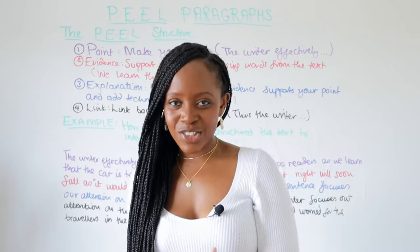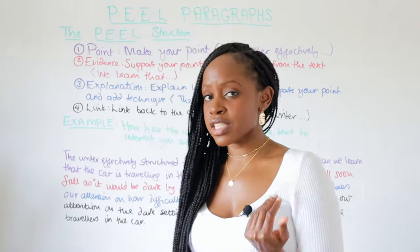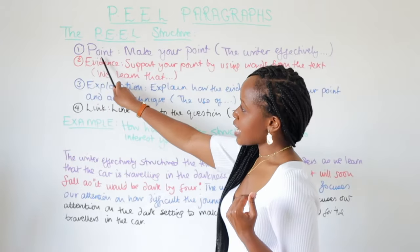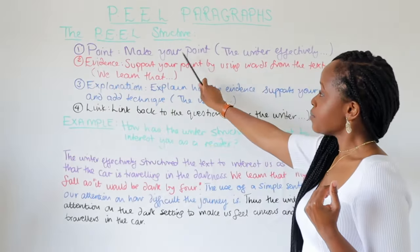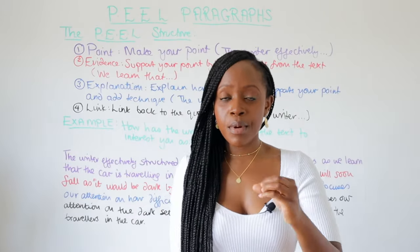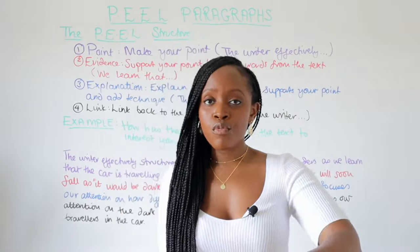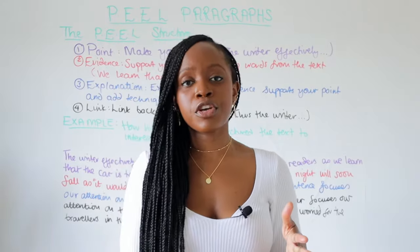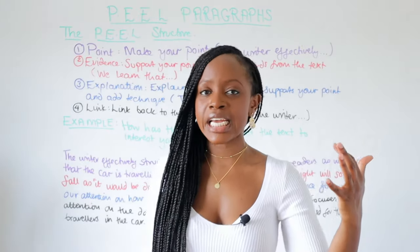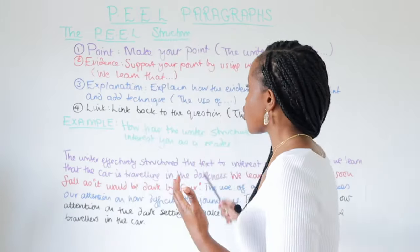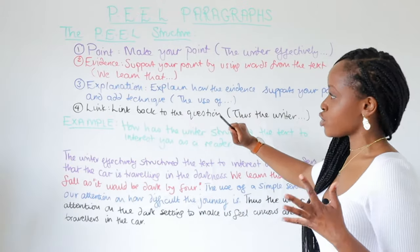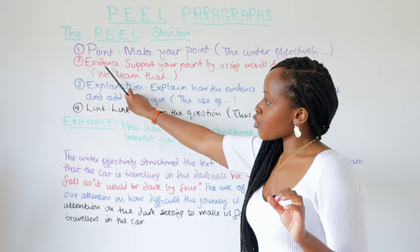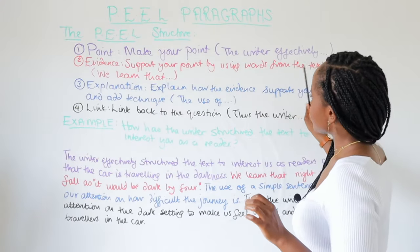The Point, Evidence, Explanation method is a really good method to adopt — the L is just an extra element at the end. So firstly, you make your Point. In your point you're referring back to the question, highlighting the keywords — do check my video on keywords if you're not entirely clear — and then answer the question directly.